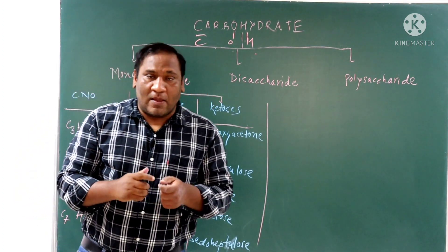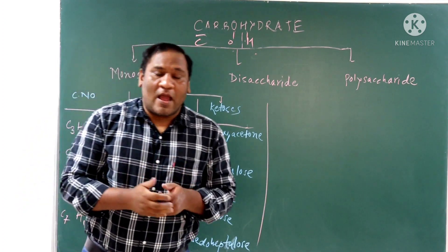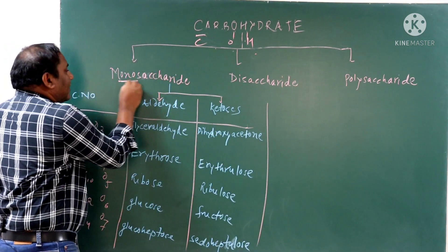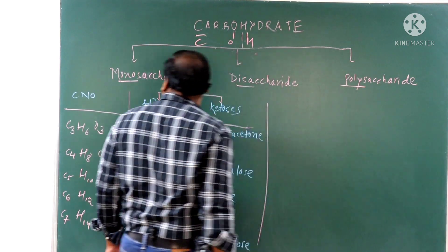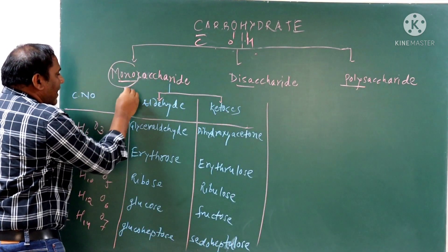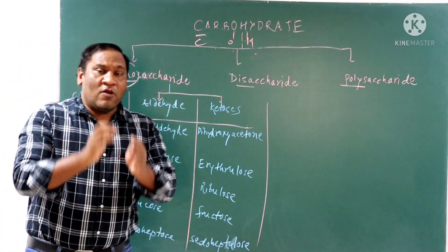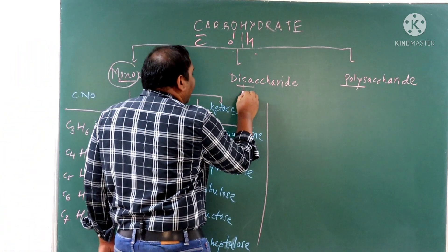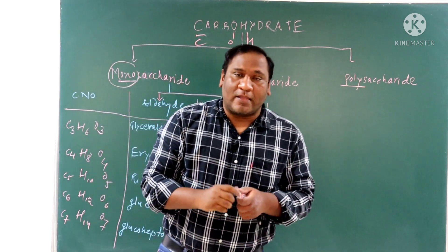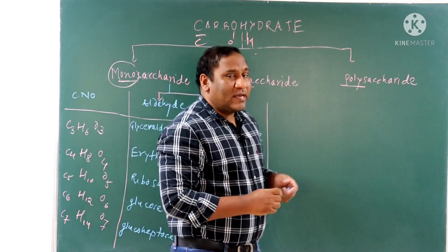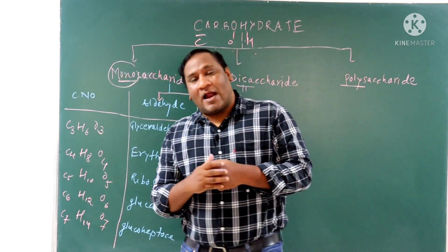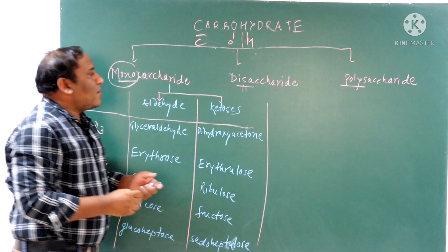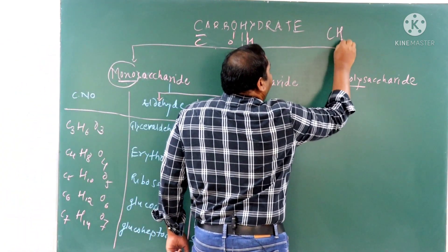Carbohydrate is defined chemically as aldehyde or ketone derivatives of polyhydroxy alcohol. Classification of carbohydrates: first, monosaccharides; second, disaccharides; and third, polysaccharides. Monosaccharides contain only one sugar molecule and cannot be further hydrolyzed. Disaccharides contain two monosaccharides joined by a glycosidic bond. Polysaccharides contain more than ten monosaccharides joined by glycosidic bonds.